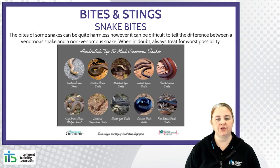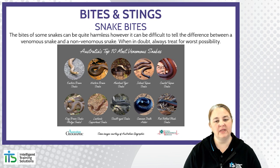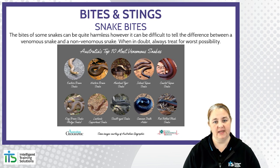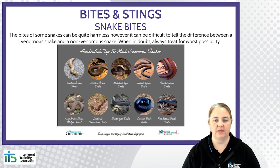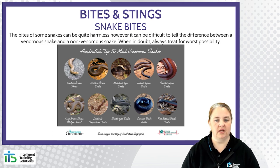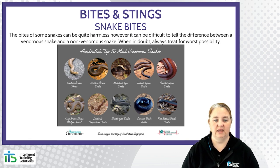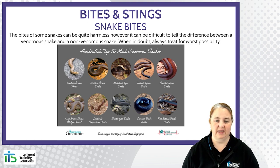You would use the pressure immobilisation technique for snake bites. It can be really hard to tell the difference between a venomous and a non-venomous snake, so if there's any doubt, treat for the worst possible case. Australia's top 10 most venomous snakes include the eastern brown, western brown, midland tiger snake, inland taipan, coastal taipan, king brown, lowlands copperhead, small-eyed snake, common death adder and the red-bellied black snake. If you can't identify the snake, don't be too worried.